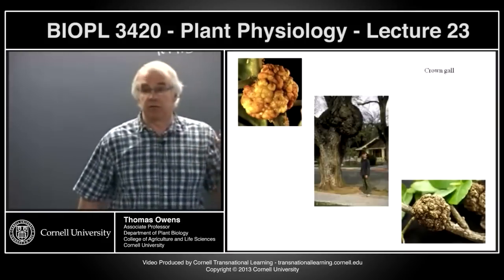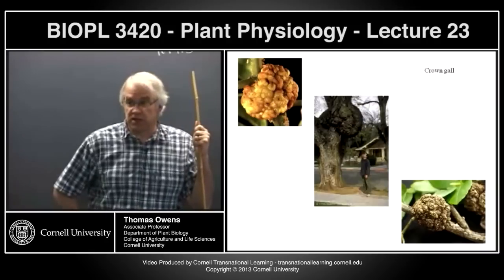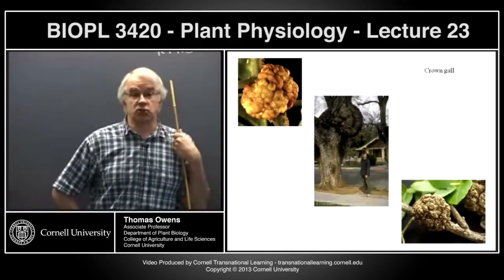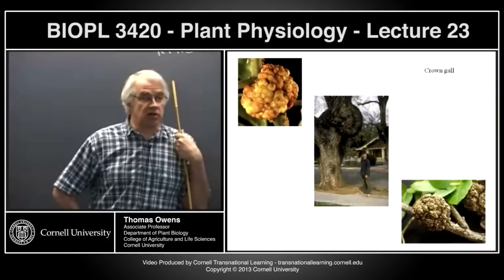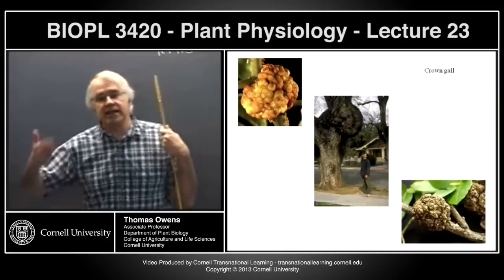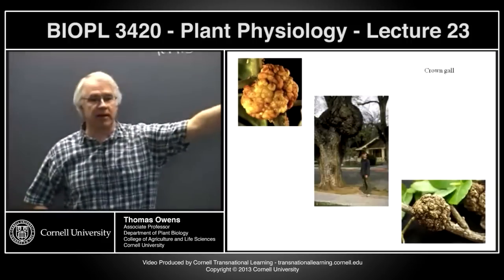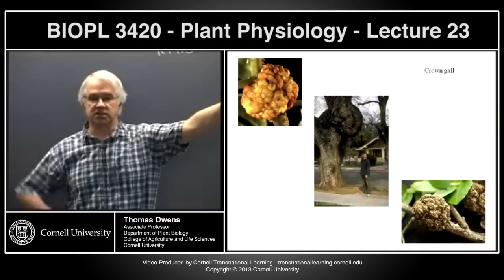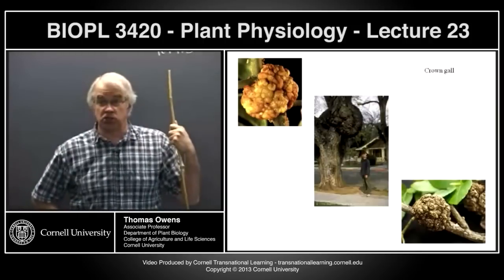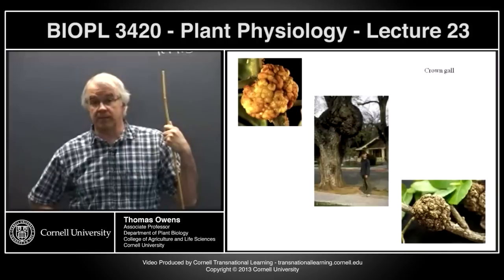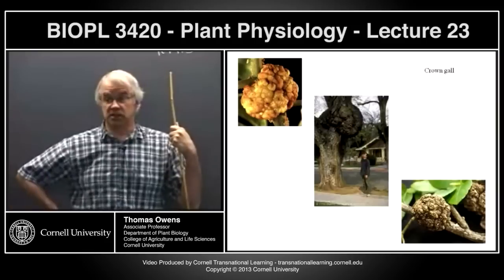Cell division occurs naturally in the root apical meristem, but something is missing in the shoot apical meristem. Adding auxin to the shoot apical meristem doesn't cause it to grow — the cells enlarge but don't divide. The key distinguishing characteristic is cell division. This started a search for compounds that could promote cell division, particularly of non-root plant cells in culture.